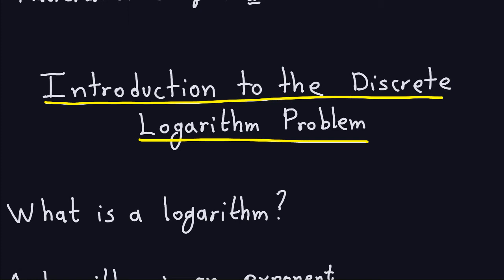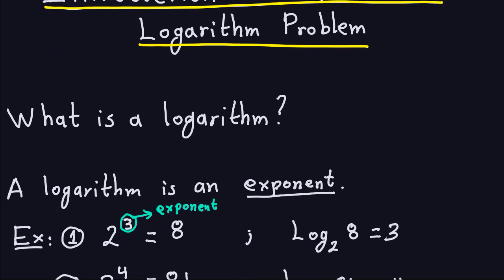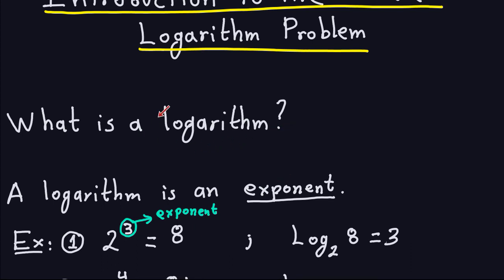The first thing I want to talk about is logarithms. A logarithm is just an exponent — that's basically what it is. For example, two to the third power is equal to eight, so the exponent is three. We say that log base two of eight is three. That log represents the exponent that the base needs to produce that number: two cubed equals eight.